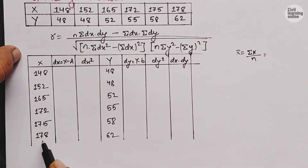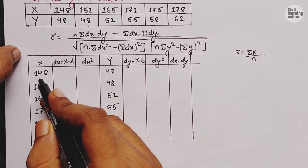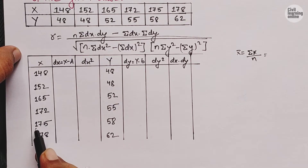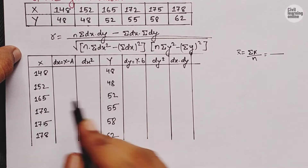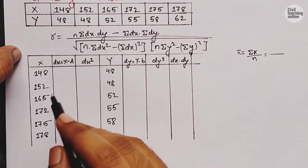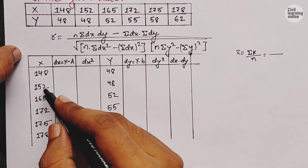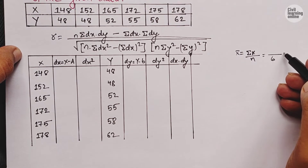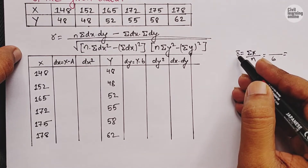We know that x-bar equals summation x divided by n. So we need to add all the x terms and divide by the number of terms. Adding 148 plus 152 plus 165 plus 172 plus 175 plus 178, and dividing by n, where n equals 6 — the number of terms.